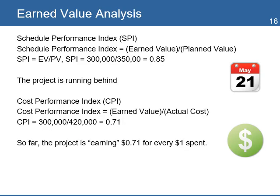Another way to determine the performance variances is by calculating the Schedule Performance Index. The value of SPI for the example is 0.85. A value less than 1 means that the project is running behind schedule. You can also calculate the Cost Performance Index, CPI. The value of CPI is 0.71. A value less than 1 means that the project has a budget overrun — it is only earning $0.71 for every dollar spent to date.